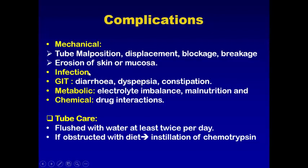The second complication of enteral feeding is infection, which may be exogenous from handling of the food causing contamination, or endogenous from the patient. Also, GI complications like diarrhea, bloating, nausea, vomiting, abdominal cramps, and constipation. Metabolic complications include electrolyte imbalance and malnutrition. Chemical complications include direct drug-nutrient interactions.